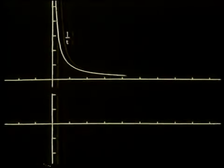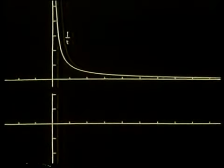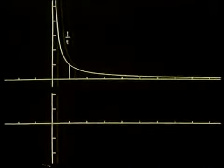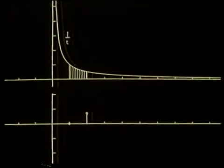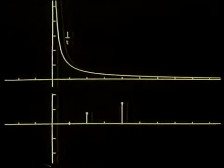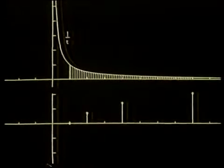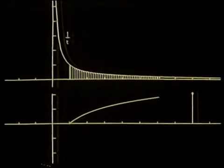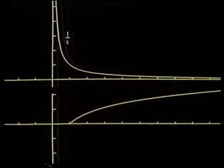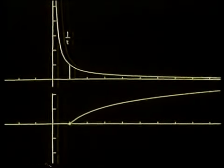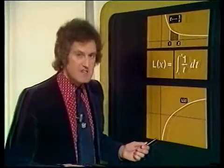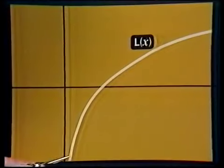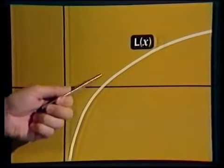We started with the 1 over t function. The area from 1 up to 1 is 0, of course. When x equals 2, the area from 1 up to 2 has this value. For x equals 4, it's this. And for x equals 8, it's this. We can do that for all values of x. We got that by looking at the area to the right of 1; moving to the left, we see the rest of the graph. So this is what the mystery function L of x looks like — it rises steeply close to the axis, and as x increases it gradually flattens off. So it looks like a log function all right.